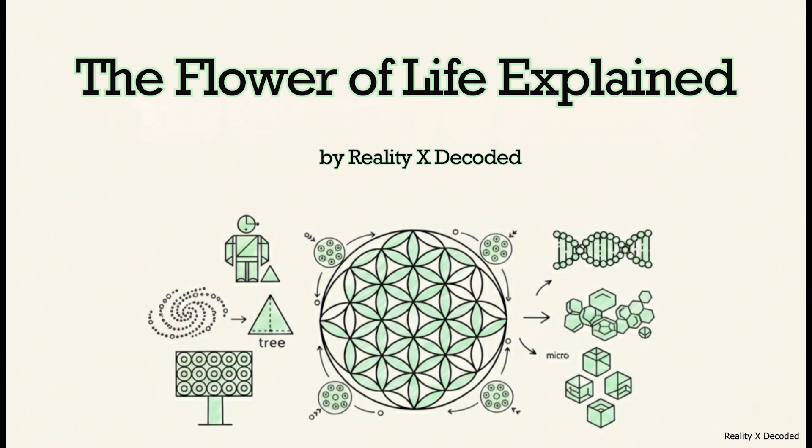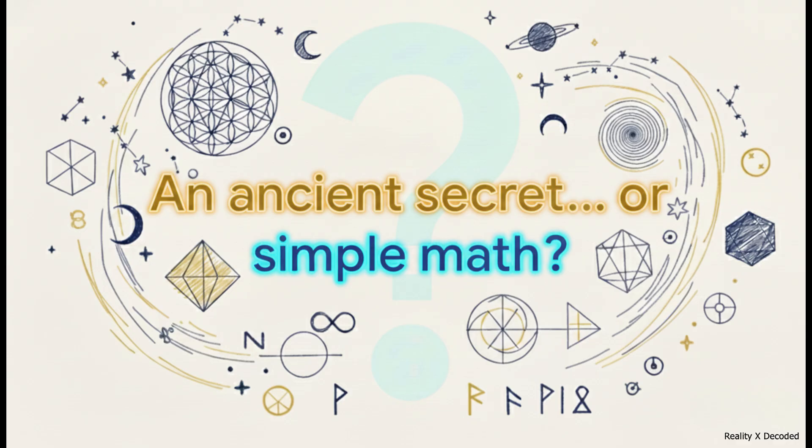It's a symbol that's been carved into ancient stone, rediscovered by civilizations all over the world, and honestly, it's still widely misunderstood. So today, we're going to dive into the real story of the flower of life. So what is this thing, really? Is it some kind of key to ancient mystical knowledge? A cosmic blueprint for reality itself? Or is it something way more fundamental? A pattern that just shows up because of the simple, undeniable logic of math? That's the big question we're going to unpack right now.